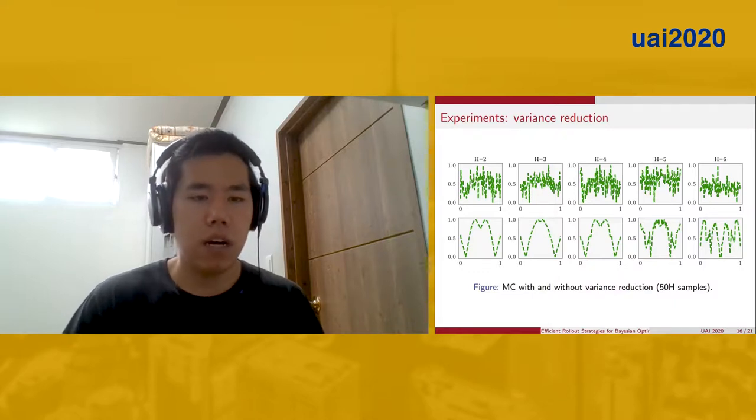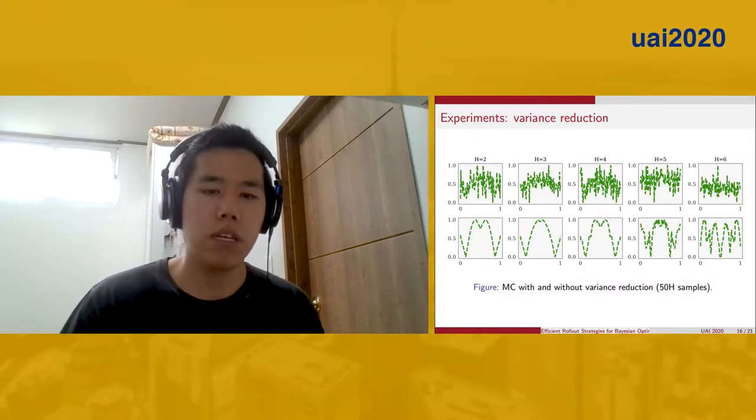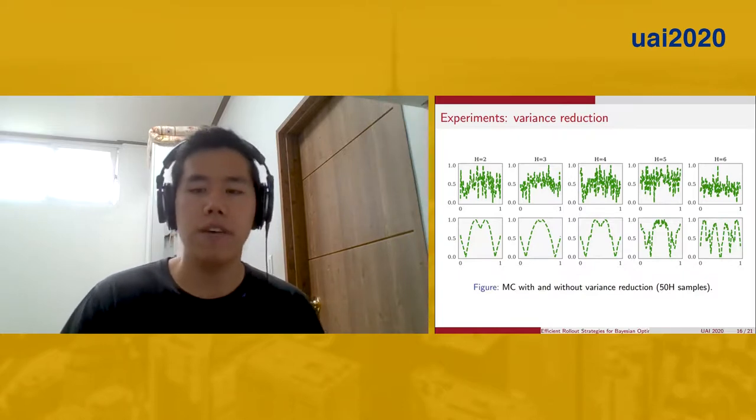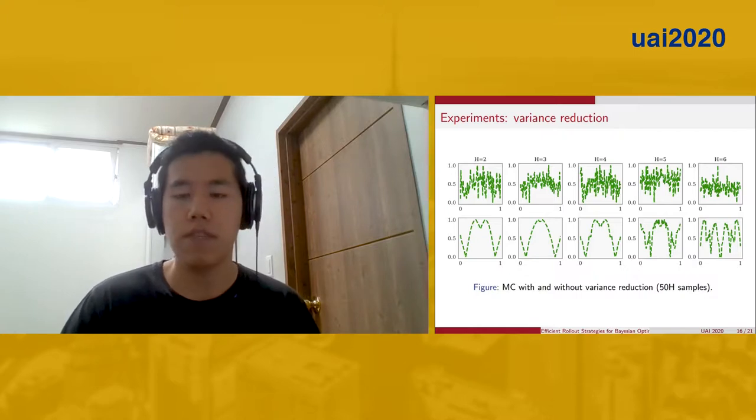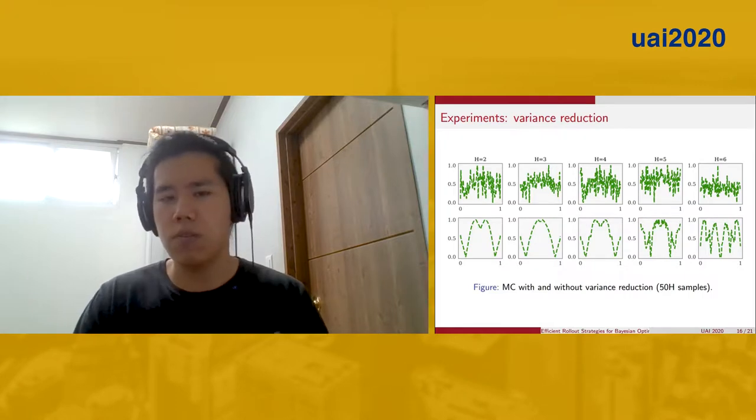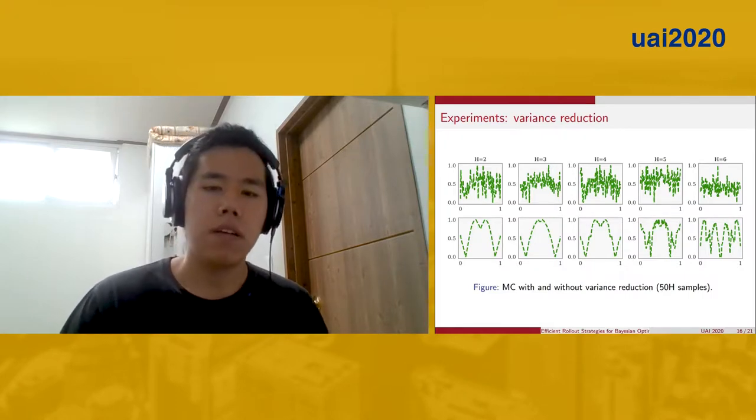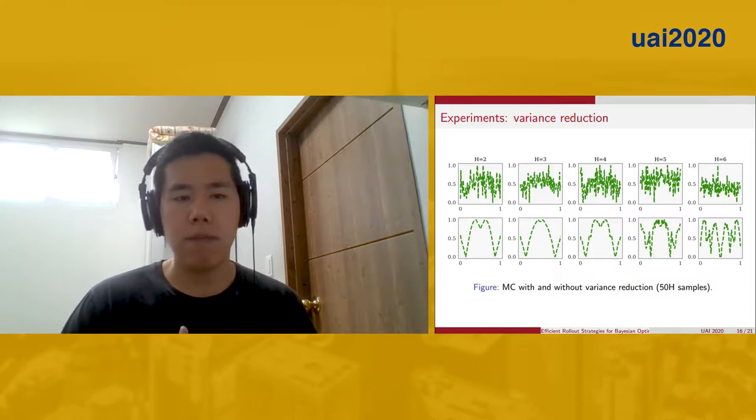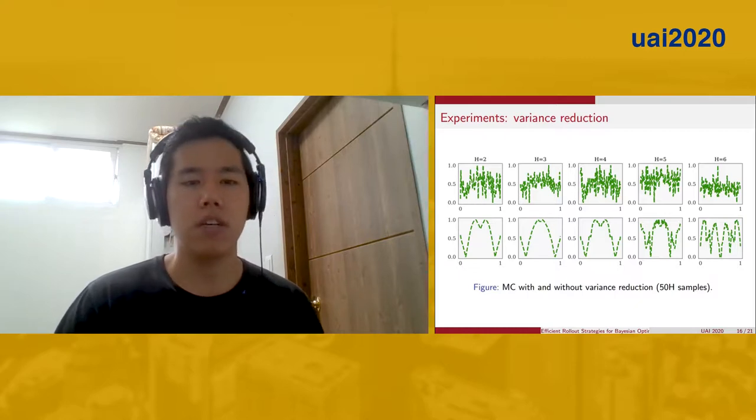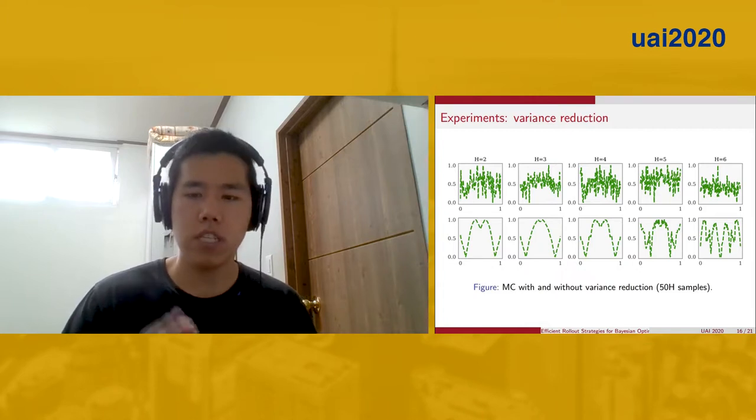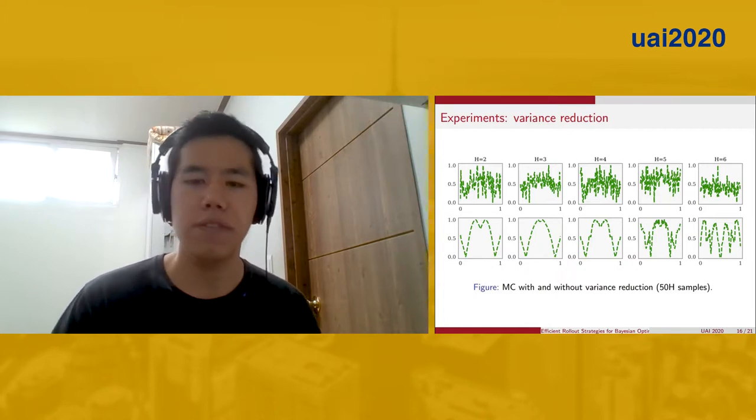This can be seen in this figure. The top row represents Monte Carlo estimation of rollout for different horizons without any variance reduction. This is using 50H samples. You can see that the rollouts themselves aren't very useful because they're simply too noisy. In the bottom, you can see rollout using our variance reduction techniques, and we've captured to a high fidelity these rollout acquisition functions, so they look much better. Rollouts for horizons 5 and 6 still look a little noisy, but in practice we would use more than 50H samples.